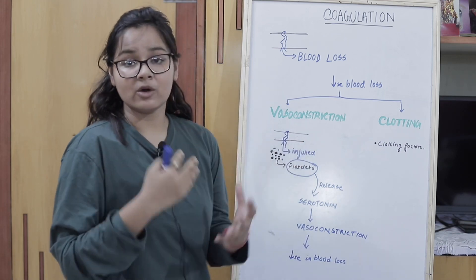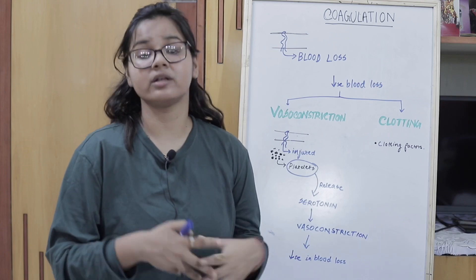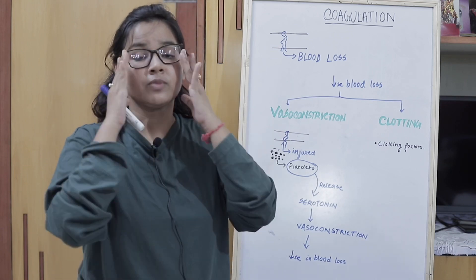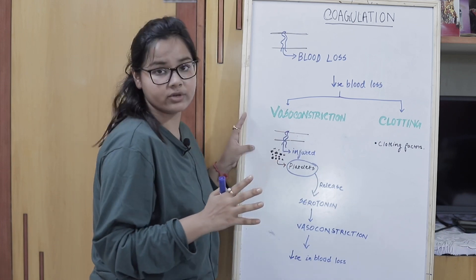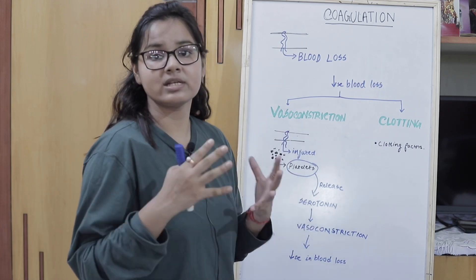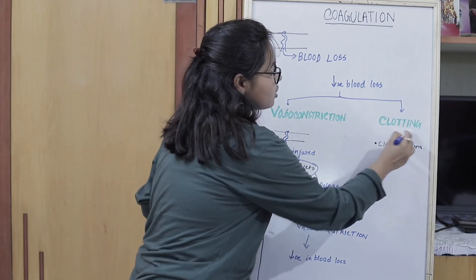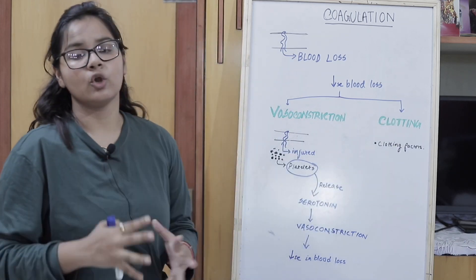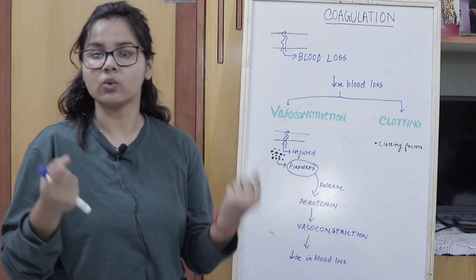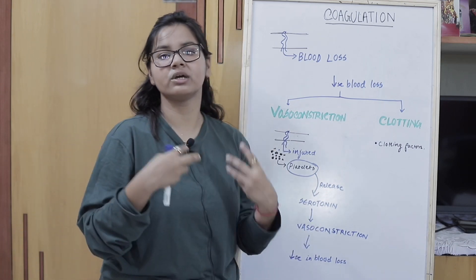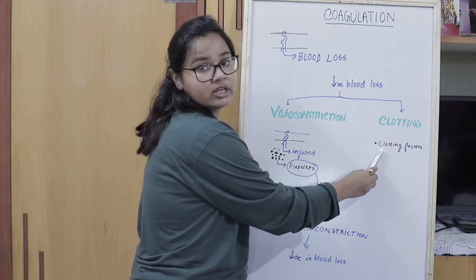Due to vasoconstriction, the blood loss is decreased but not stopped. This is basically a temporary phenomenon which occurs immediately after injury. The permanent solution that will stop the blood loss is clotting, also known as coagulation. For clotting, what we need are the clotting factors.